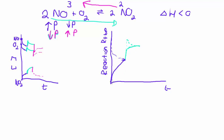As far as the reaction rate graph is concerned, the sharp decrease in pressure affects both forward and reverse reactions, so both lines go down sharply. But which one will be higher? The one that needs to go through a gradual decrease. Because the reverse reaction is favored, the solid line will be higher than the dotted line. Therefore, we see a gradual decrease in our reverse reaction and a gradual increase in our forward reaction until they meet again.